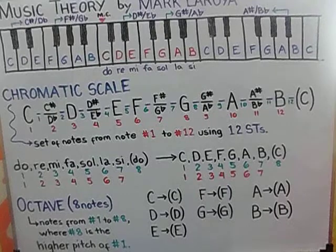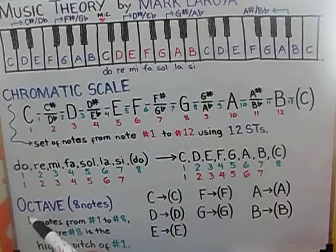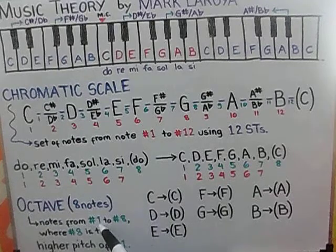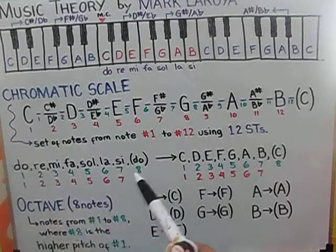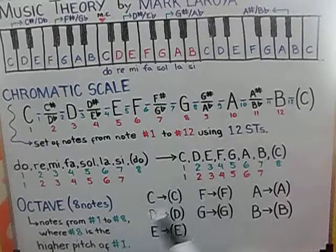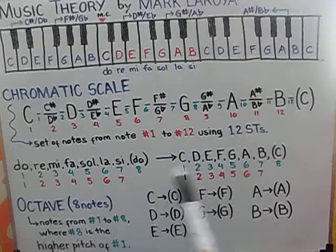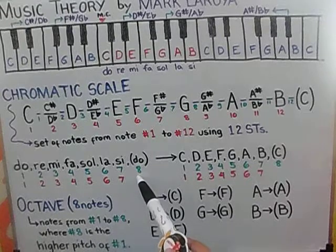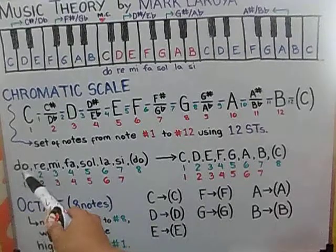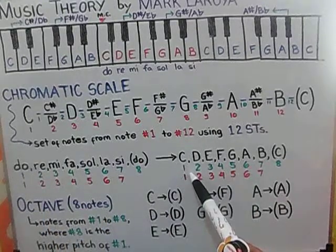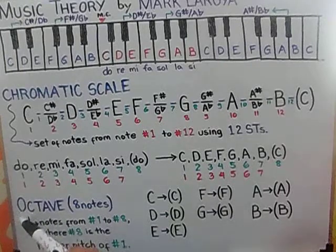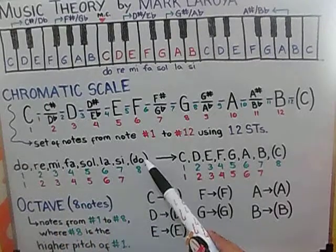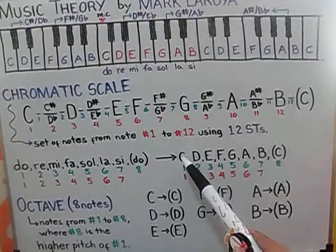Now, we have this what we call an octave. An octave is set of notes from number 1 to number 8. Number 1 to number 8. Where 8, number 8, is the higher pitch of number 1. So, therefore, an octave set of notes composed of 8 notes. 8 notes from DO to DO and C or C to C.